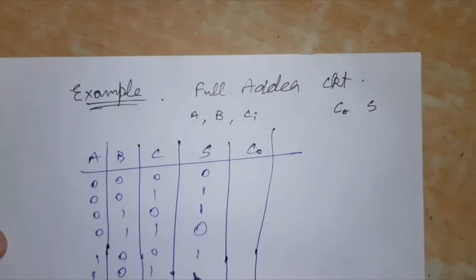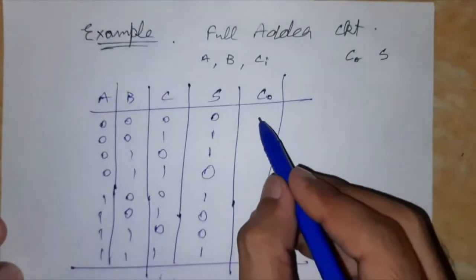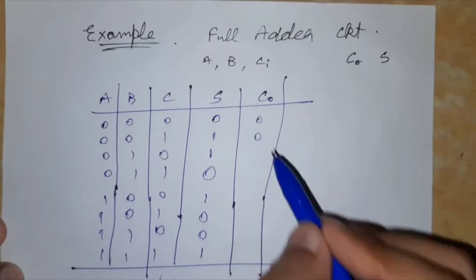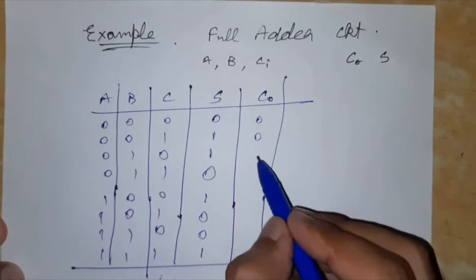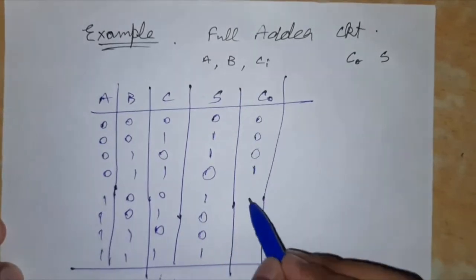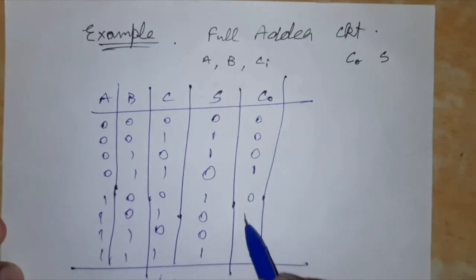So for sum we know that it is 0 1 1 0, 1 0, 0 1, and for C out that will be 0 0 0 1 0 1 1 1.